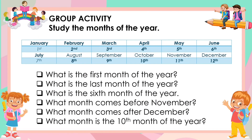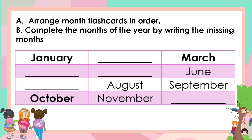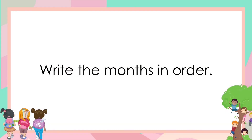Now, let's have a group activity. Study the months of the year and answer the following questions: What are the months of the year? Which month comes first? Which one is last? Can you tell me the month of your birthday? Here is another activity — arrange month flashcards in order and complete the months of the year by writing the missing months. Remember to write the months in order.